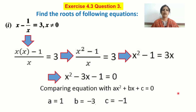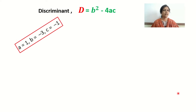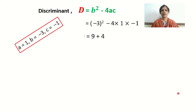Since we have the values of a, b, and c, let us find the value of the discriminant. D equals b squared minus 4ac. Substituting: b squared is minus 3 the whole square, minus 4 into 1 into minus 1. Minus 3 squared is 9, and minus times minus gives plus, so we get 9 plus 4, which equals 13. That is the value of the discriminant.